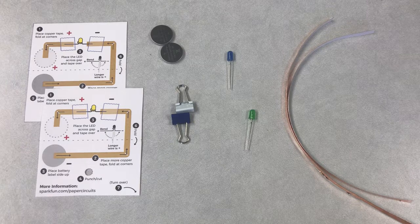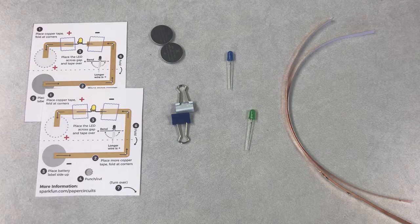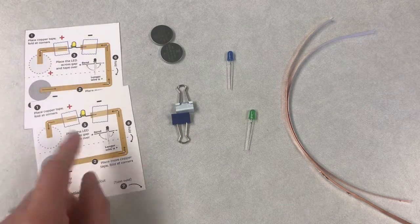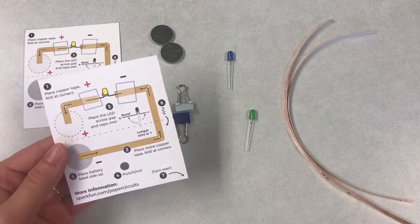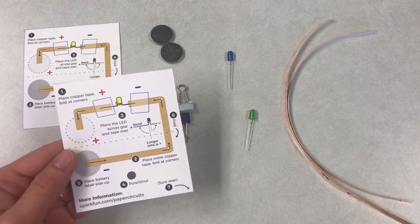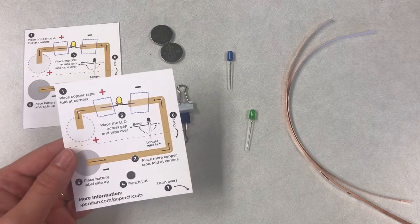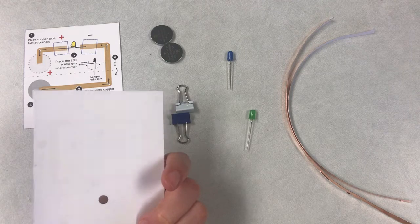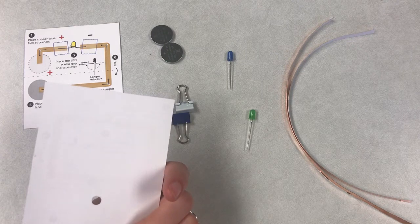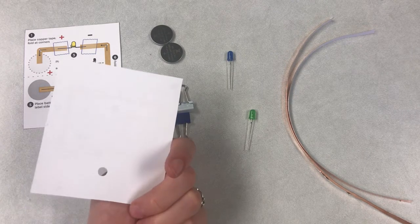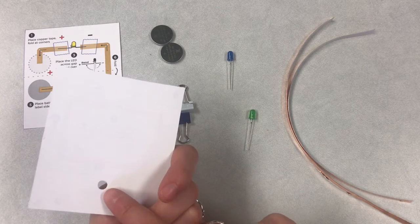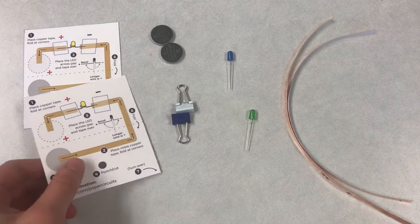Alrighty, everybody, let's take a look at what we're going to get in our craft kit this week. We're going to get two cards. On one side, it has some instructions for how to attach your light bulb and your copper tape, and on the other side, it's blank so that you can draw whatever kind of picture you want. I already have punched a hole for your light bulb here, so that's one step that you don't have to do.